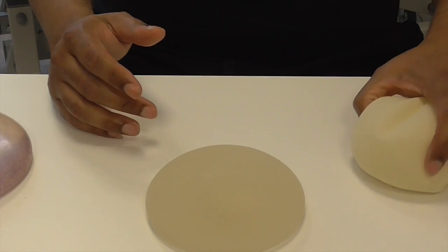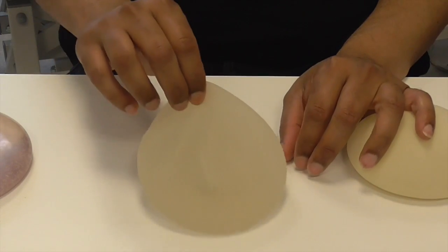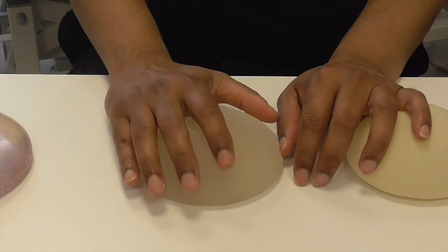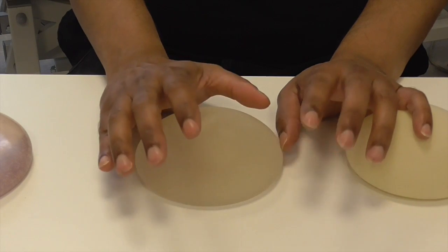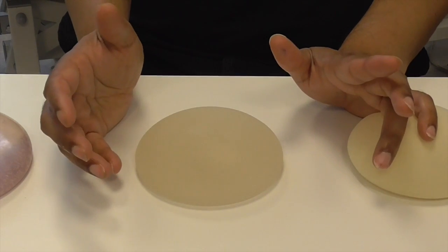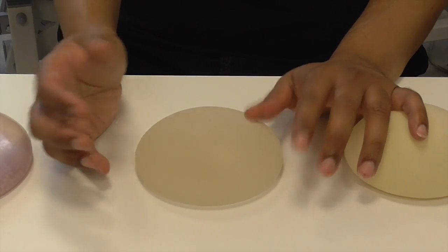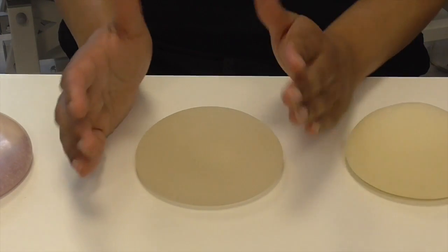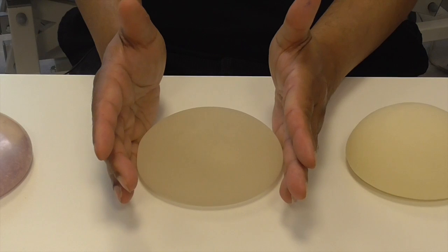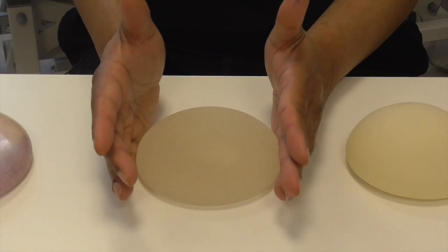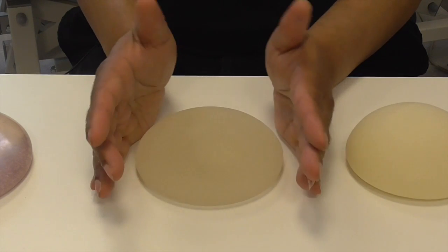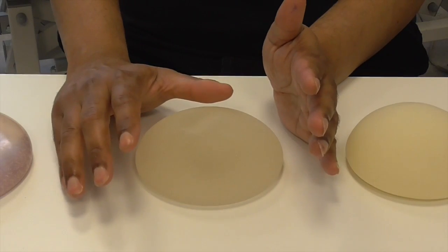So what is actually capsular contracture? When you put a breast implant into a patient it's a foreign body, much like a hip implant or a heart valve implant. In all these cases the foreign body is looked upon by our bodies as something we want to get rid of or at least not be aware of.